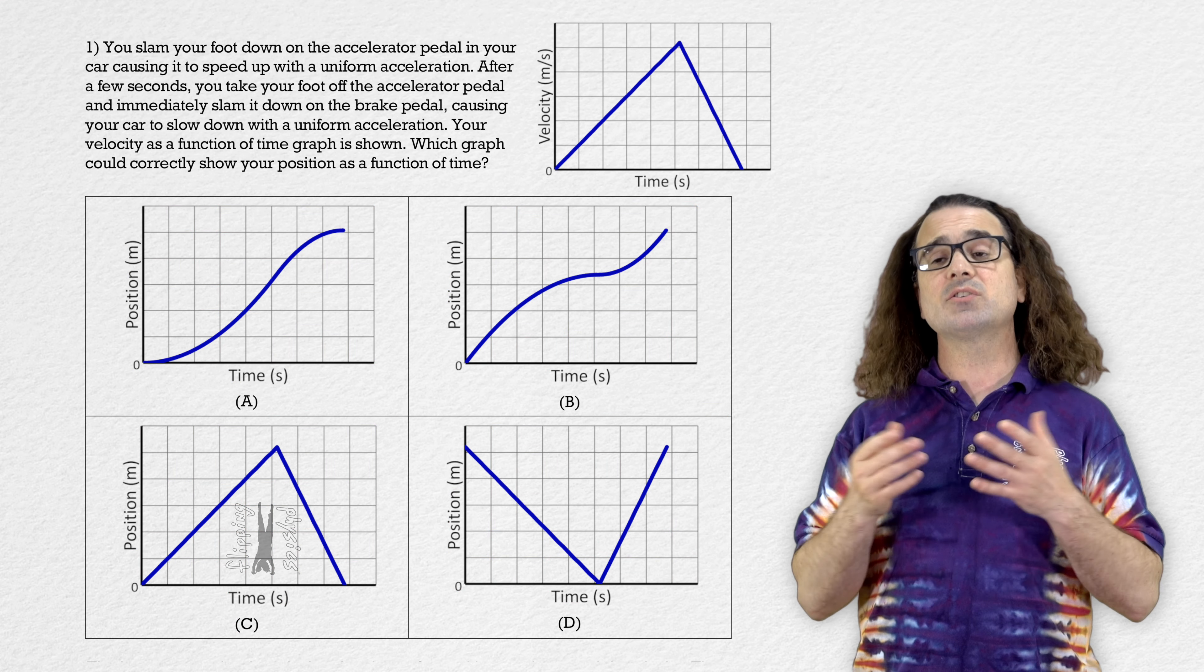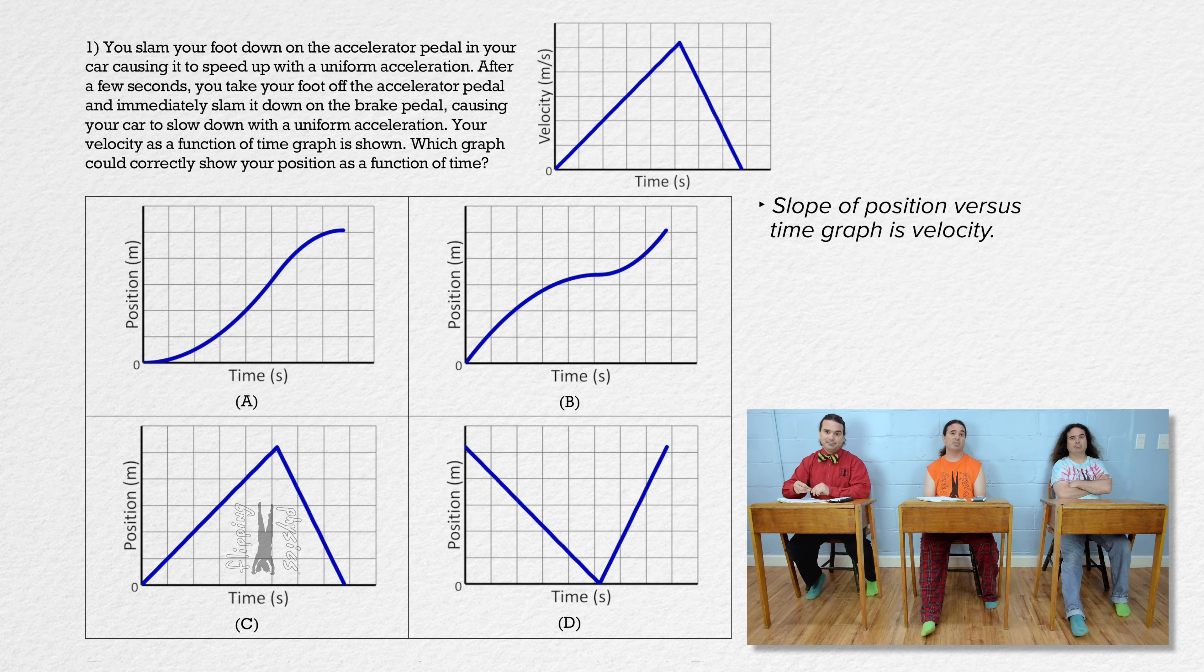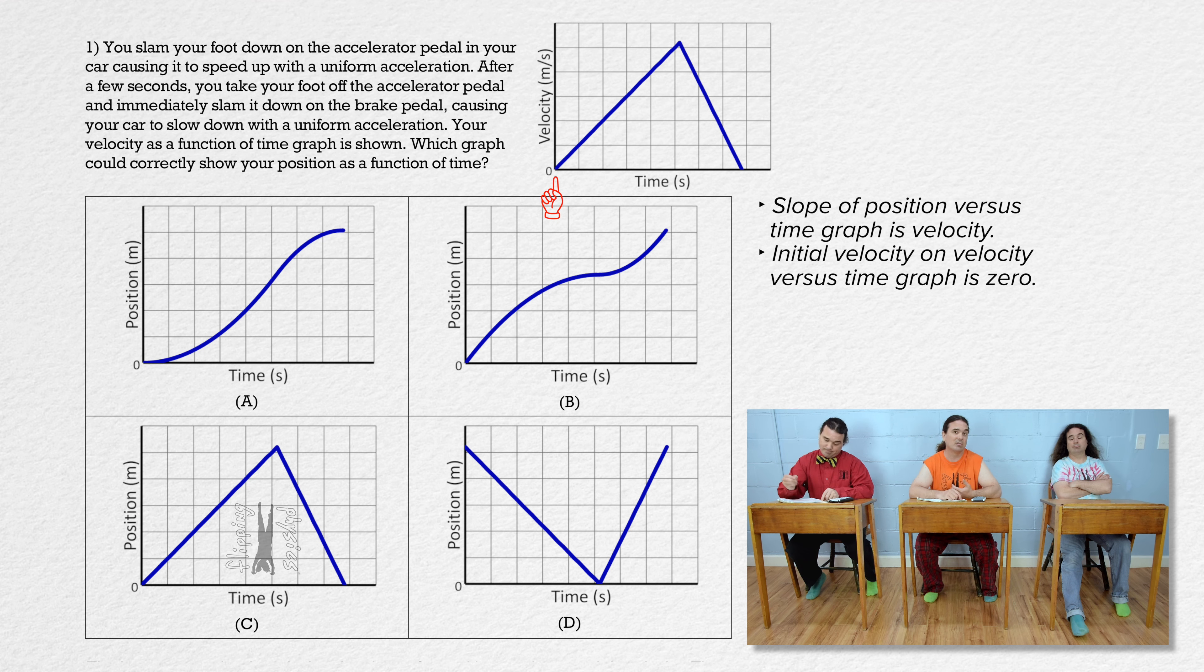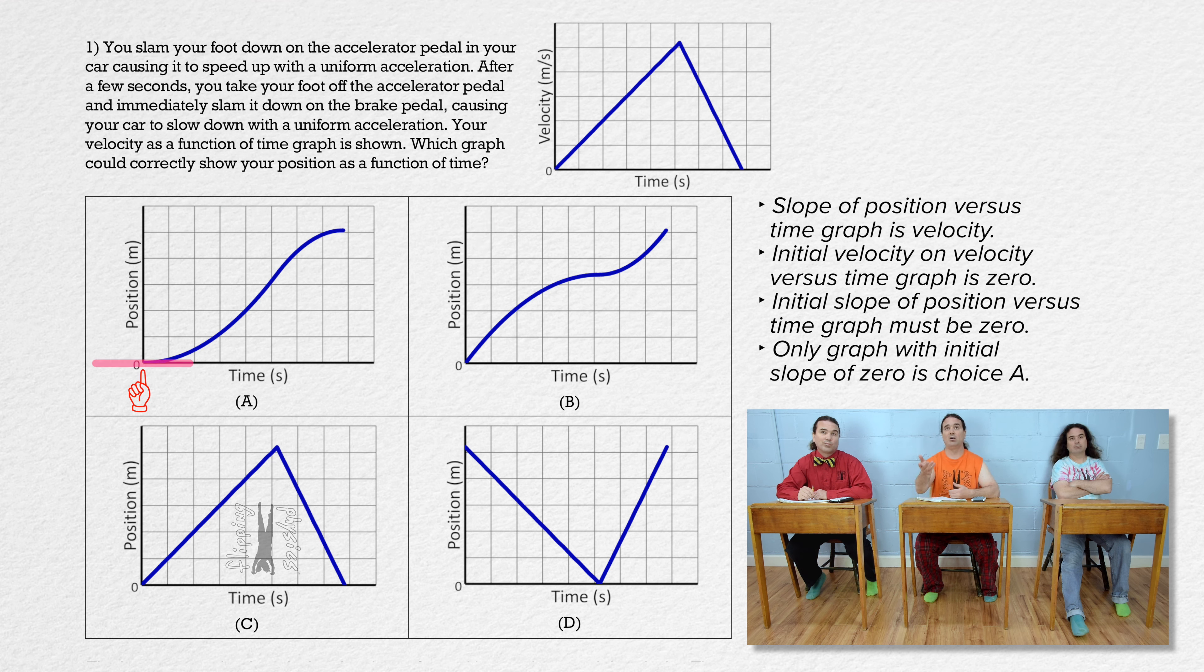Thank you Billy. Bobby, please solve this one. Okay, well, the slope of a position versus time graph is velocity. Therefore, we use the slopes of the position versus time graphs to figure out which one could fit with the given velocity versus time graph. The initial velocity on the velocity versus time graph is zero. So the initial slope of the position versus time graph must also be zero. And the only position versus time graph which fits that is choice A. All three of the other position versus time graphs have an initial slope which is not zero.